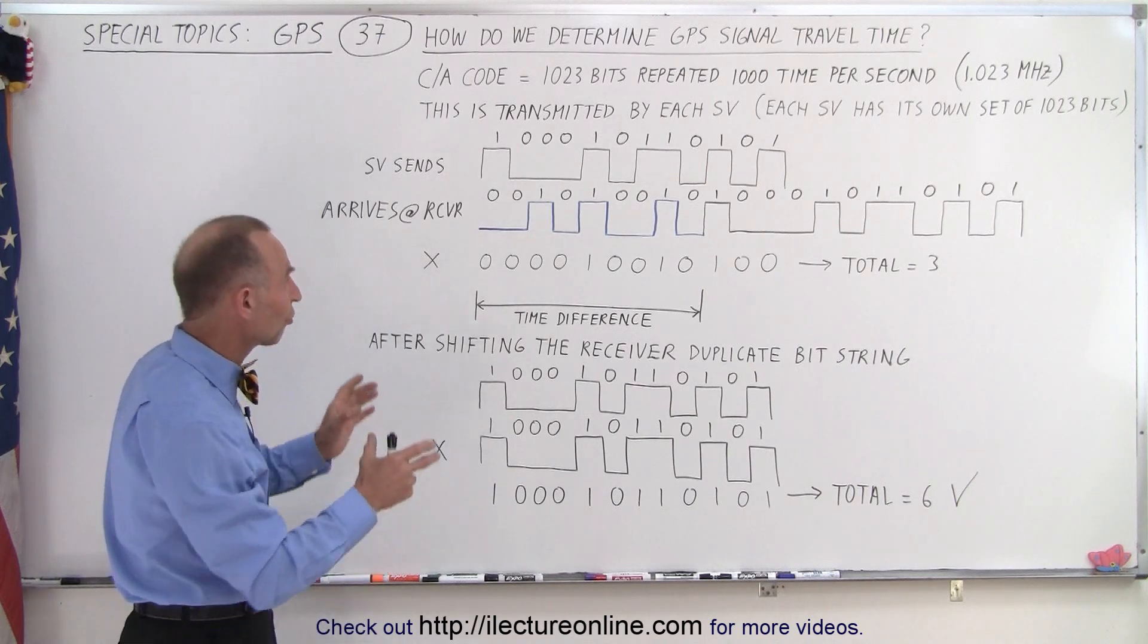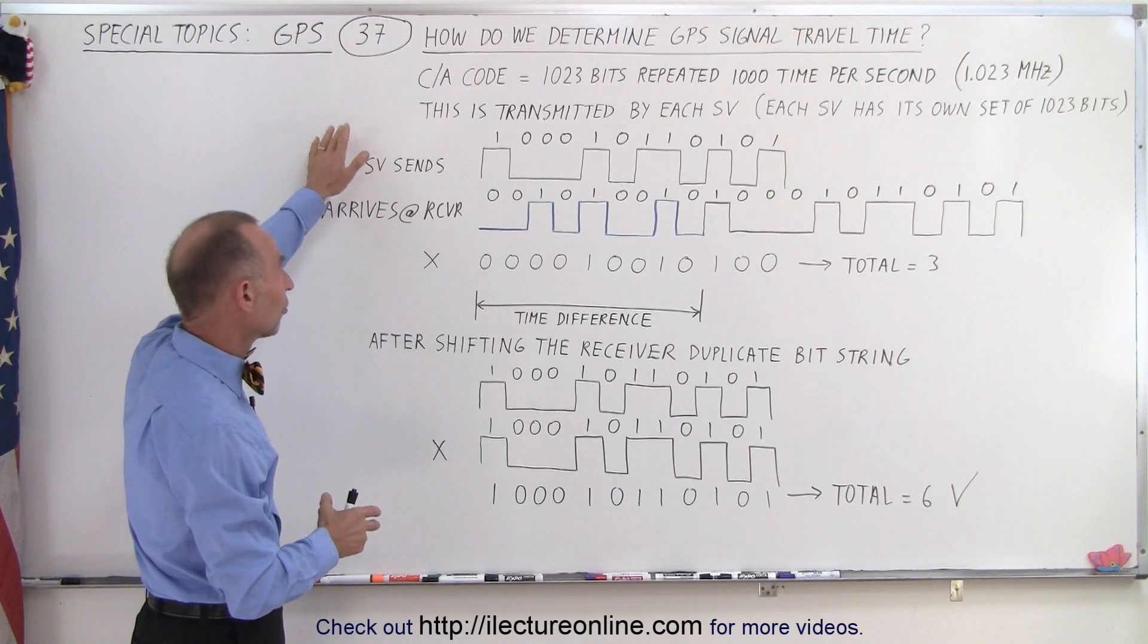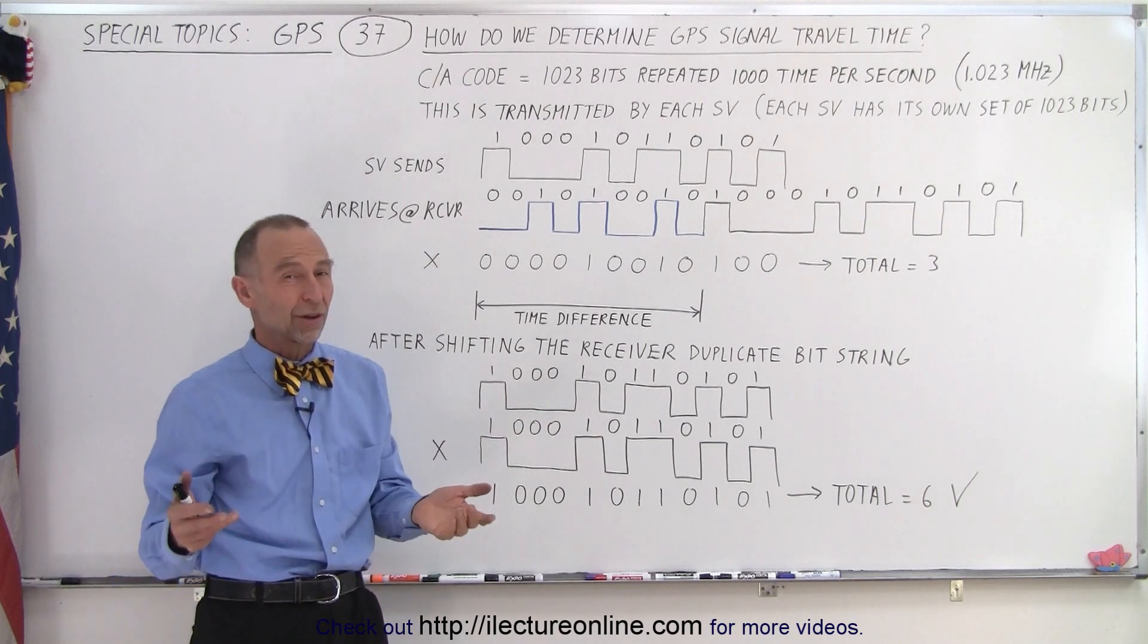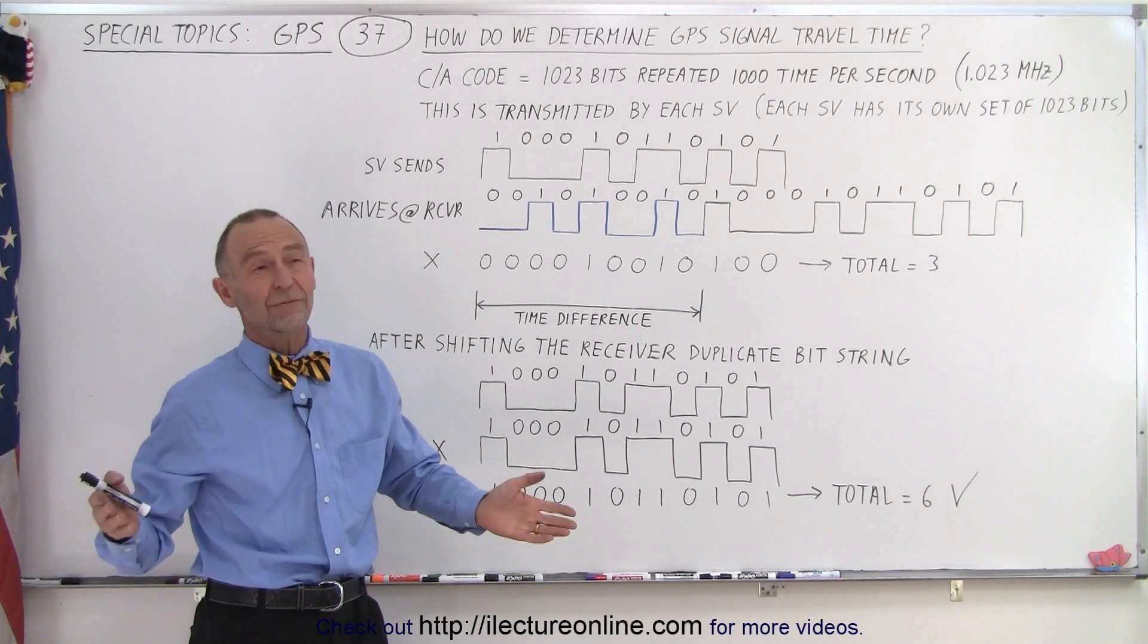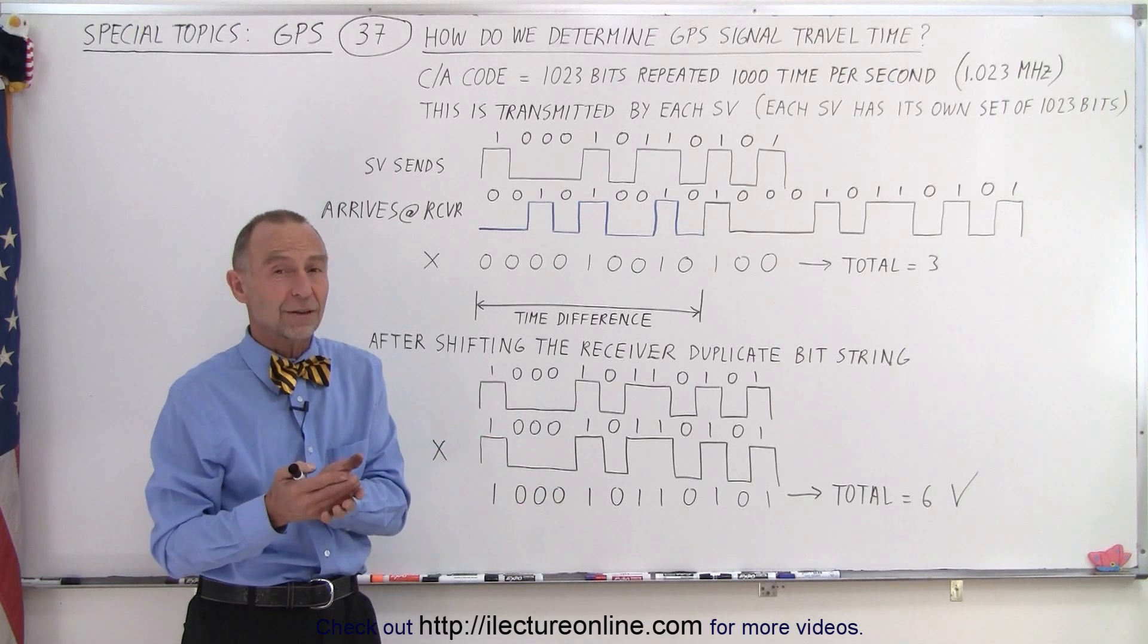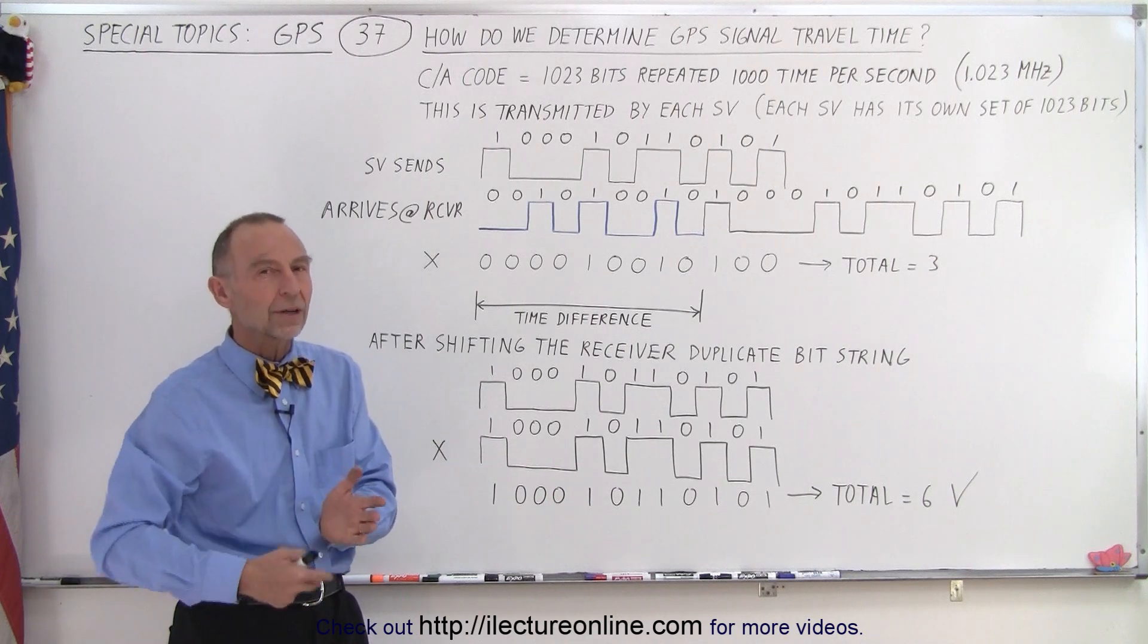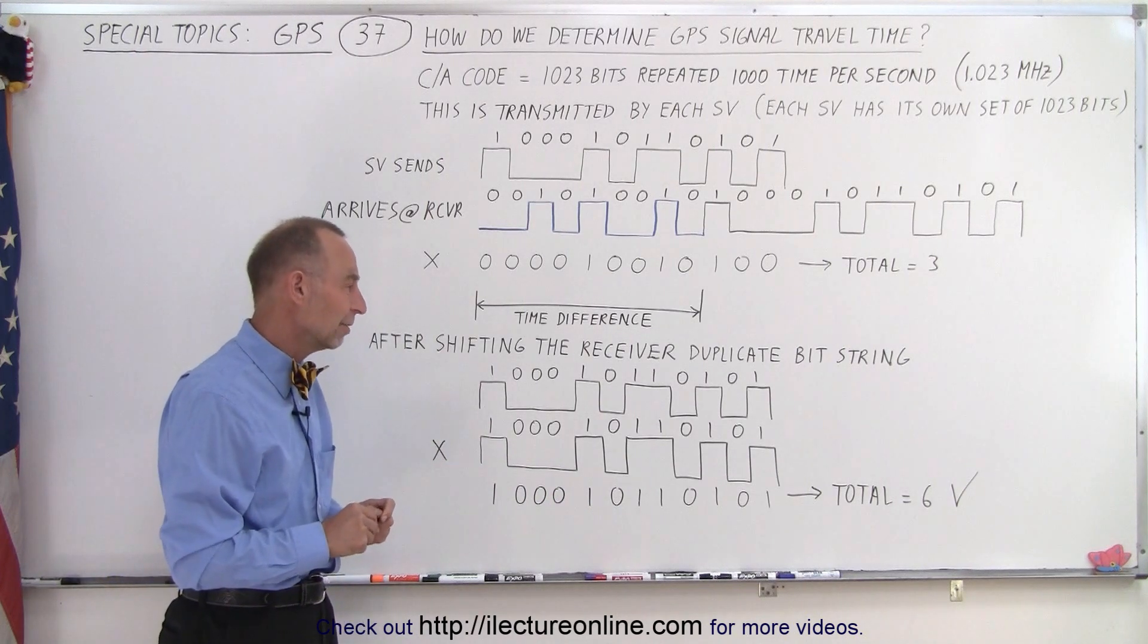So that gives us the first coarse measurement called the CA measurement by using the CA bit string. Of course one millisecond isn't nearly enough because that still puts us off by as much as 1000 feet. We want to get much more accurate than that but that's done through later algorithms and we'll show you how that is done in the future.